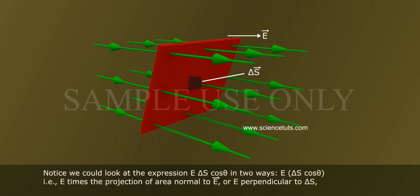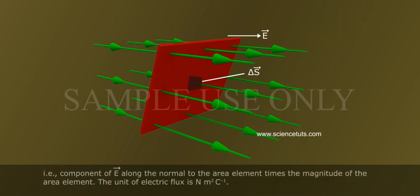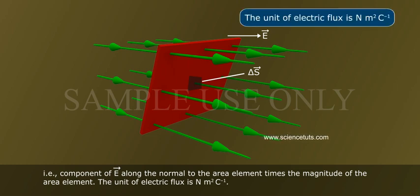Notice we could look at the expression e delta s cos theta in two ways: e delta s cos theta, that is, e times the projection of area normal to e bar, or e perpendicular to delta s, that is, component of e bar along the normal to the area element times the magnitude of the area element. The unit of electric flux is newton meters square per coulomb.